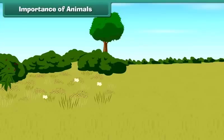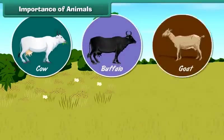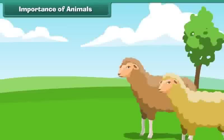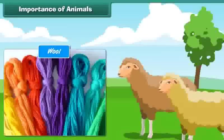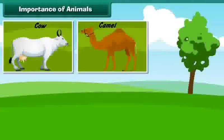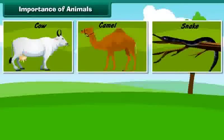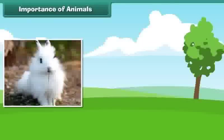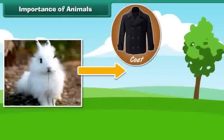Animals help us in many ways. Cows, buffalos and goats give us milk. Sheep give us wool that keeps us warm in winters. Cows, camels, snakes, etc. give us leather for jackets, bags and shoes. Some animals give us fur for coats, jackets and muffs.